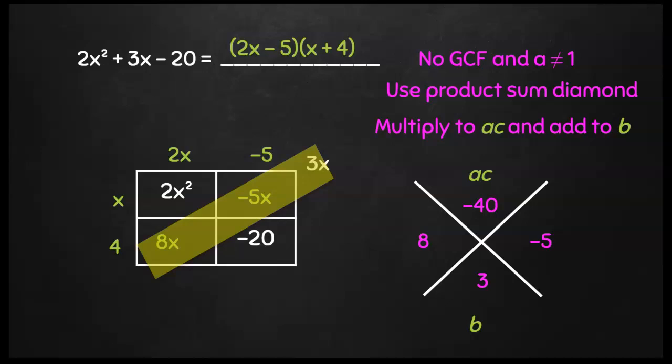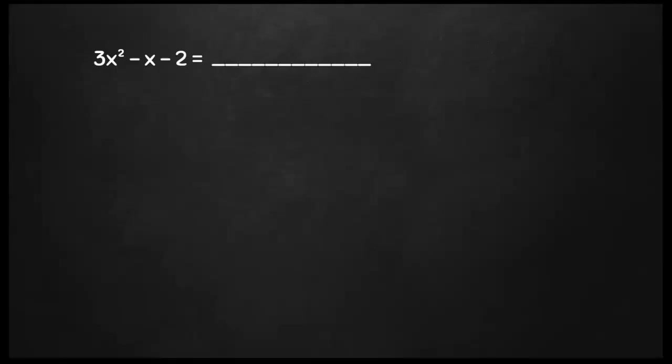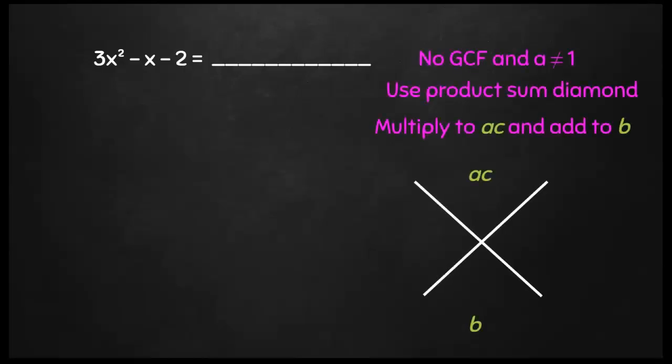Let's do another example together. Same thing. You're going to notice that your a value is not 1 and no GCF. So use that product sum diamond and let's figure out what numbers will multiply to a and c and add to b. That's negative 6 and negative 1. So when I look at my numbers, I'm going to get negative 3 and 2.